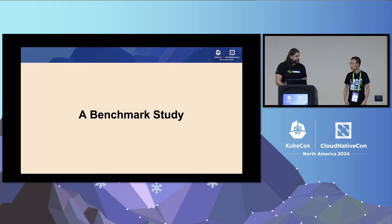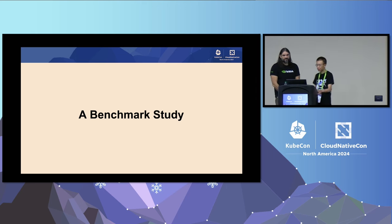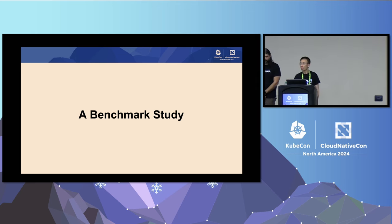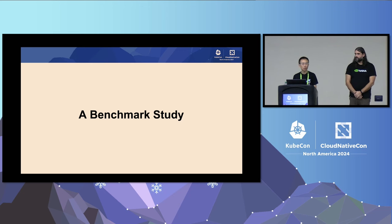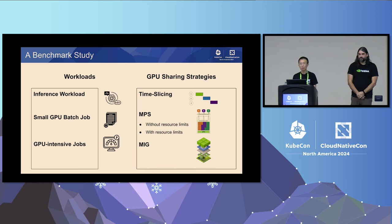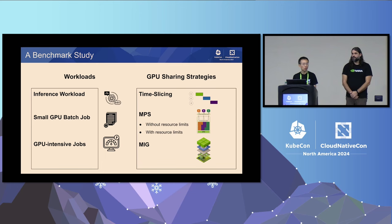With that introduction, Kevin hands off to Yuan Chen, who will share key results and observations from a benchmark study on different GPU sharing strategies using DRA. The study looks at different types of workloads: inference workloads, smaller GPU batch jobs, and GPU-intensive batch jobs, comparing time slicing, MPS without limits, MPS with limits, and MIG.